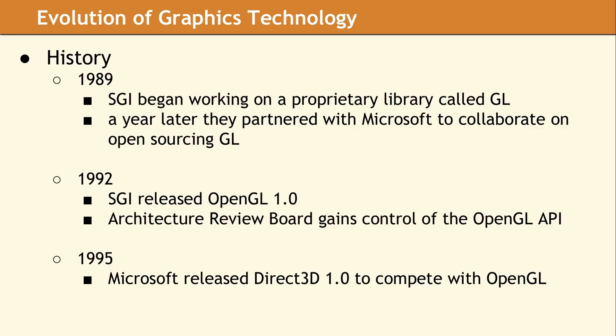In an effort to increase the number of potential users for the library and therefore bring in more customers, SGI decided to collaborate with Microsoft to bring an open source version of GL to the Windows platform. This project was successful, and in 1992 the OpenGL 1 standard was released. While SGI had been the main designer, they decided to place the future direction of OpenGL in the hands of an industry group called the Architecture Review Board, or ARB.